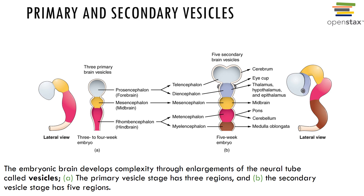As development continues the cerebrum enlarges to the point where it covers the other portions of the brain. The forebrain becomes the cerebrum, which includes the cerebral cortex, white matter, and basal nuclei, as well as the thalamus, pineal gland, and hypothalamus. The hindbrain forms the brain stem, the pons, the cerebellum, and the medulla oblongata.